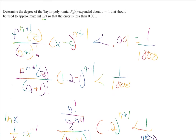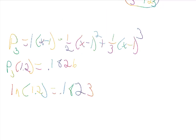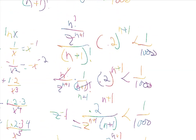So if we want to approximate ln of 1.2, we use the degree-3 Taylor polynomial centered at 1. Using that formula gives approximately 0.1826 from the calculator. Using the actual natural log key gives 0.1823 — it agrees to 3 decimal places, accurate to within one thousandth. That's how we find the specific error and the degree needed.